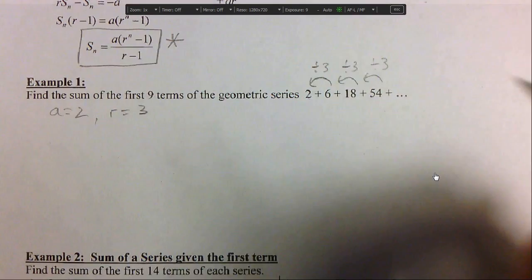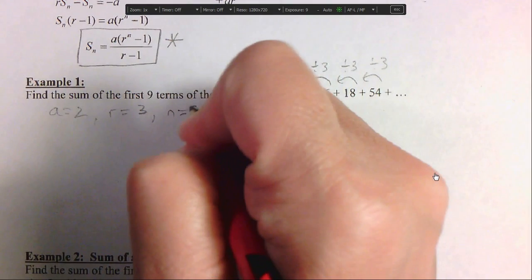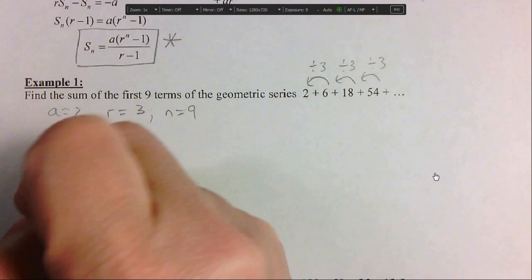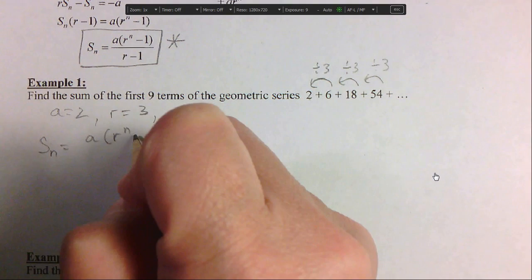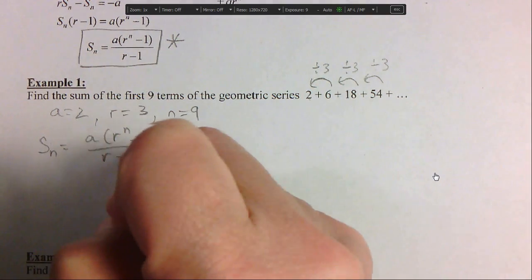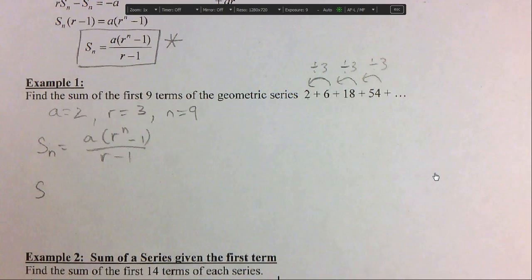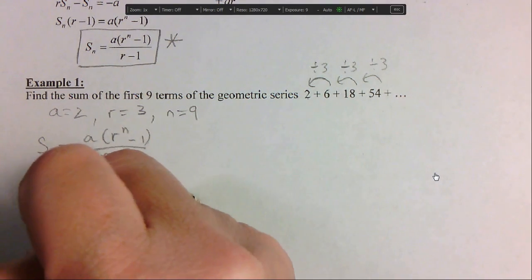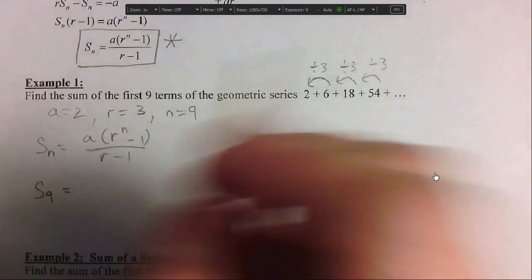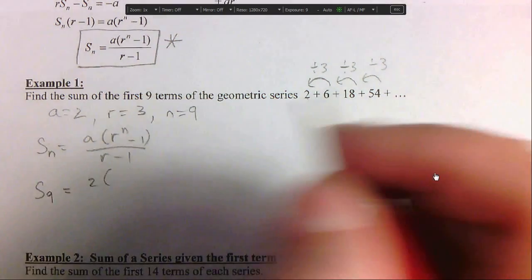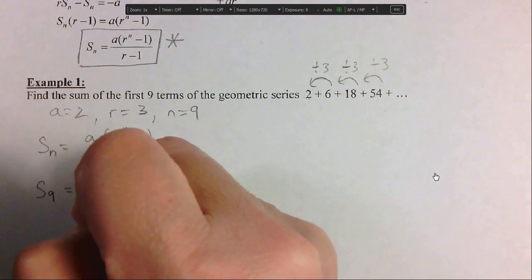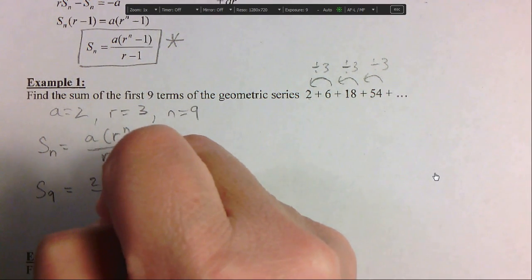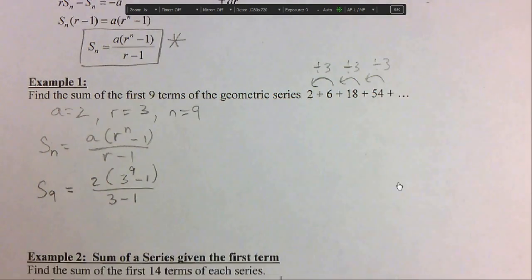They ask for the first nine terms, so that means n equals 9. We write the formula first. Get used to writing this formula: a times r to the n minus 1 over r minus 1. Then s9 is what they're asking for, so we're going to plug in 2 times 3 to the 9 minus 1 over 3 minus 1. Go ahead and plug that into the calculator and see what you get.